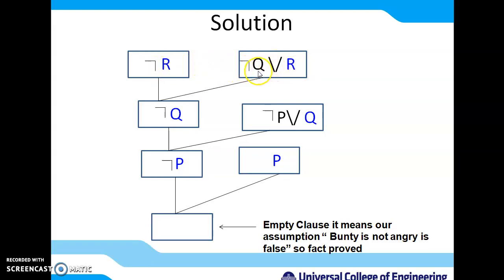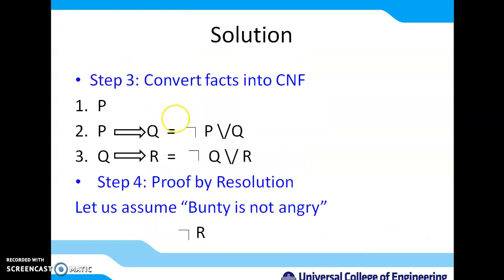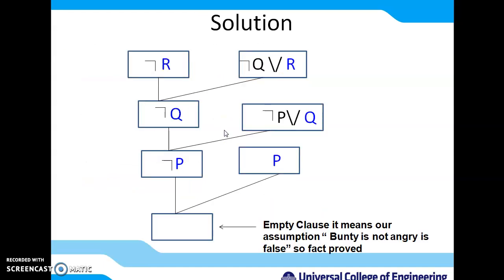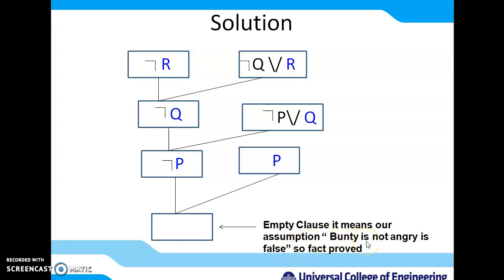We now have NOT Q. We take the second CNF clause NOT P OR Q — NOT Q and Q cancel each other, leaving NOT P, meaning 'Toby is not hungry'. But we have the fact P, meaning 'Toby is hungry'. So P cancels NOT P. What remains is an empty clause. This means our assumption — 'Bunty is not angry' — is false. Therefore, 'Bunty is angry' is proved.